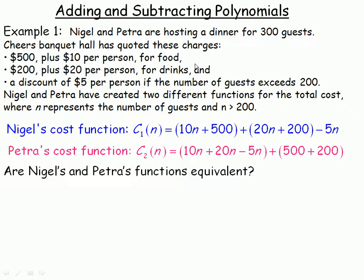The banquet hall has quoted these charges. First of all, there's a $500 fixed charge, and then $10 per person for the food. And then for the drinks, there's a $200 fixed charge, $20 per person. And as long as there's more than 200 guests, there's a $5 per person discount.